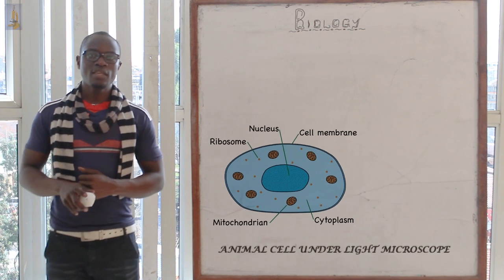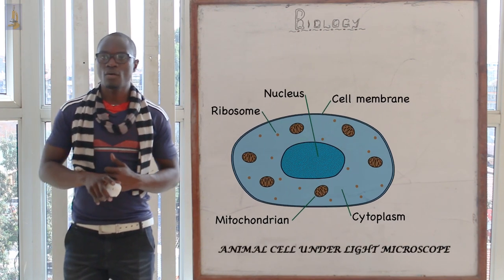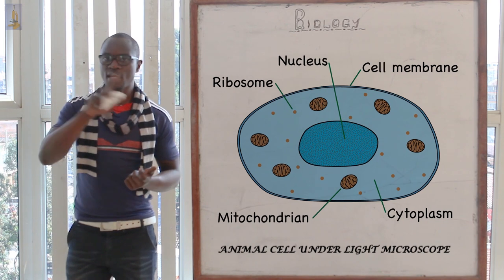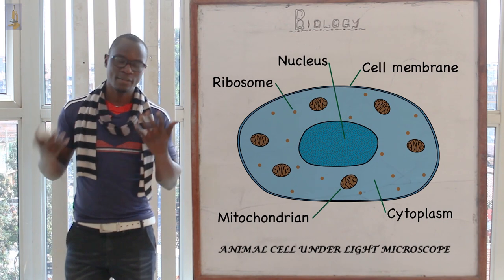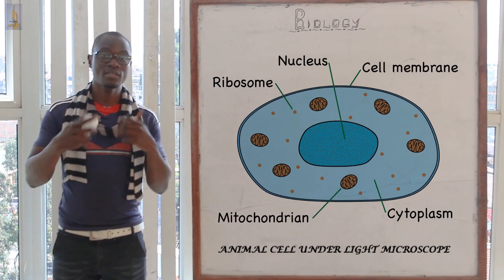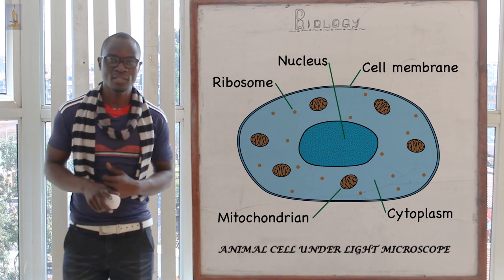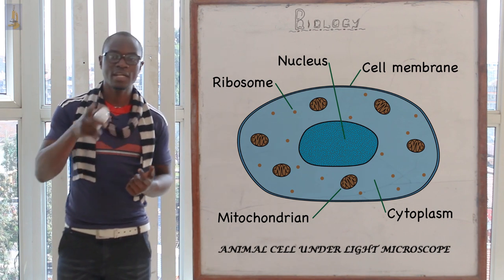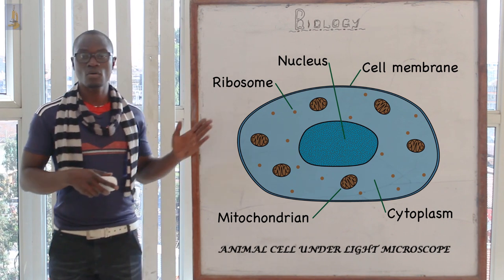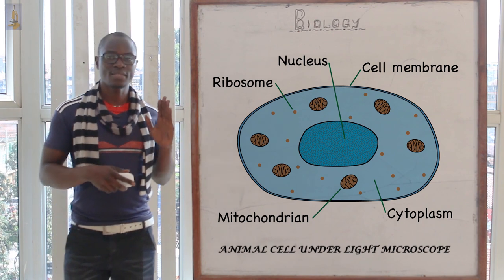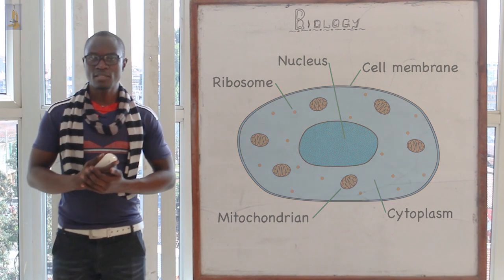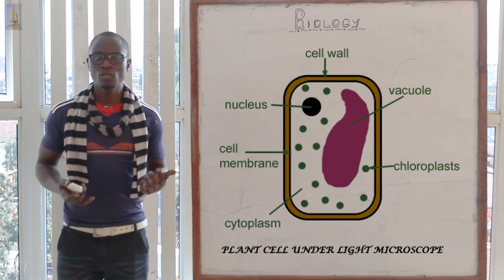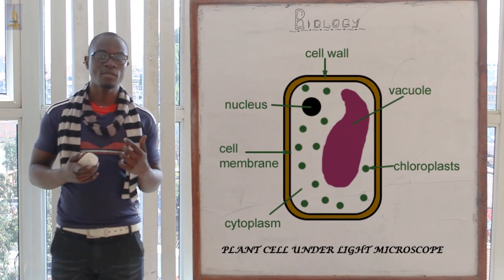In the animal cell, under the light microscope we can see the cytoplasm, which surrounds the inside of the cell, as well as the nucleus, which is centrally located, as shown in the diagram. In the plant cell, we can similarly see the cytoplasm.